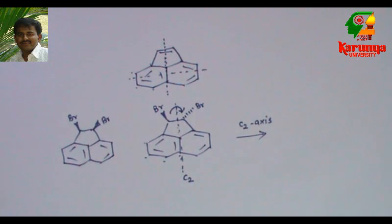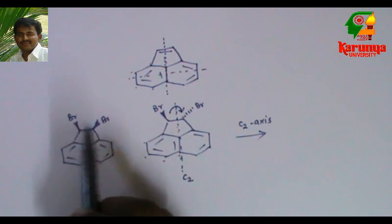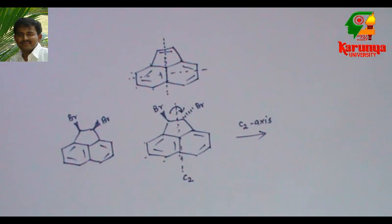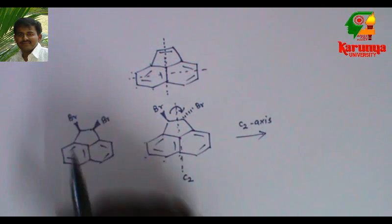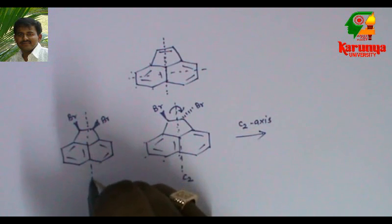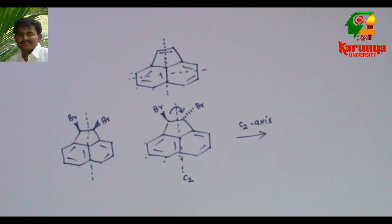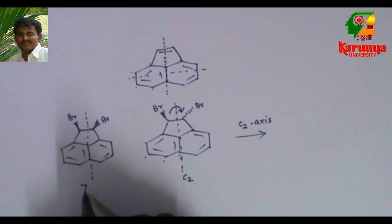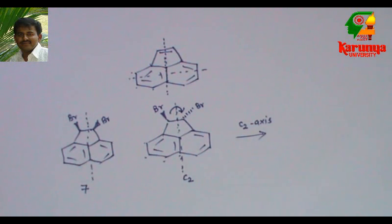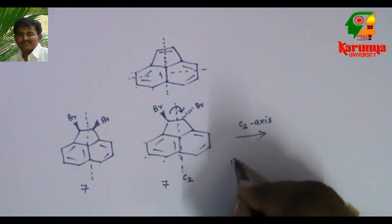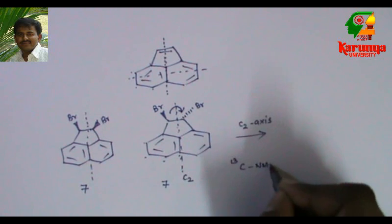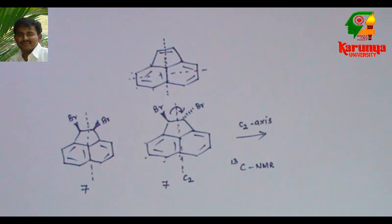Interestingly, the diastomer in which both the bromo compounds are cis need not be bromo. We can go for even methyl groups. It has plane of symmetry. Now the number of signals in C13 NMR for this will be seven, and for this also will be seven. We cannot differentiate these two compounds by C13 NMR. It may not be helpful.